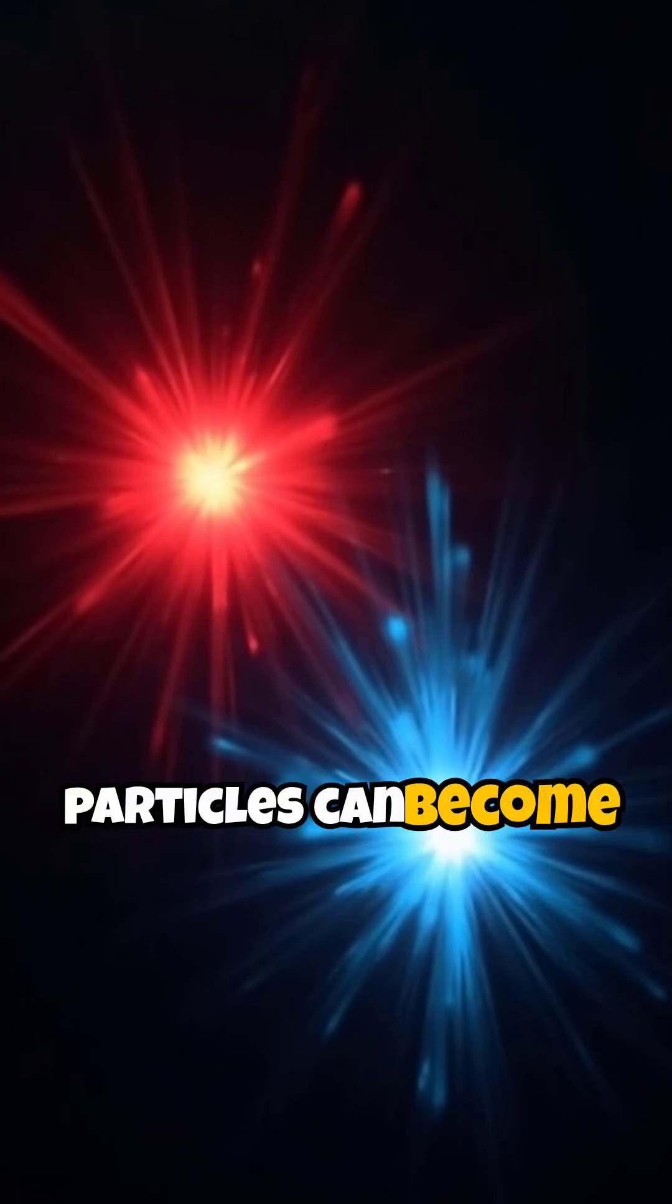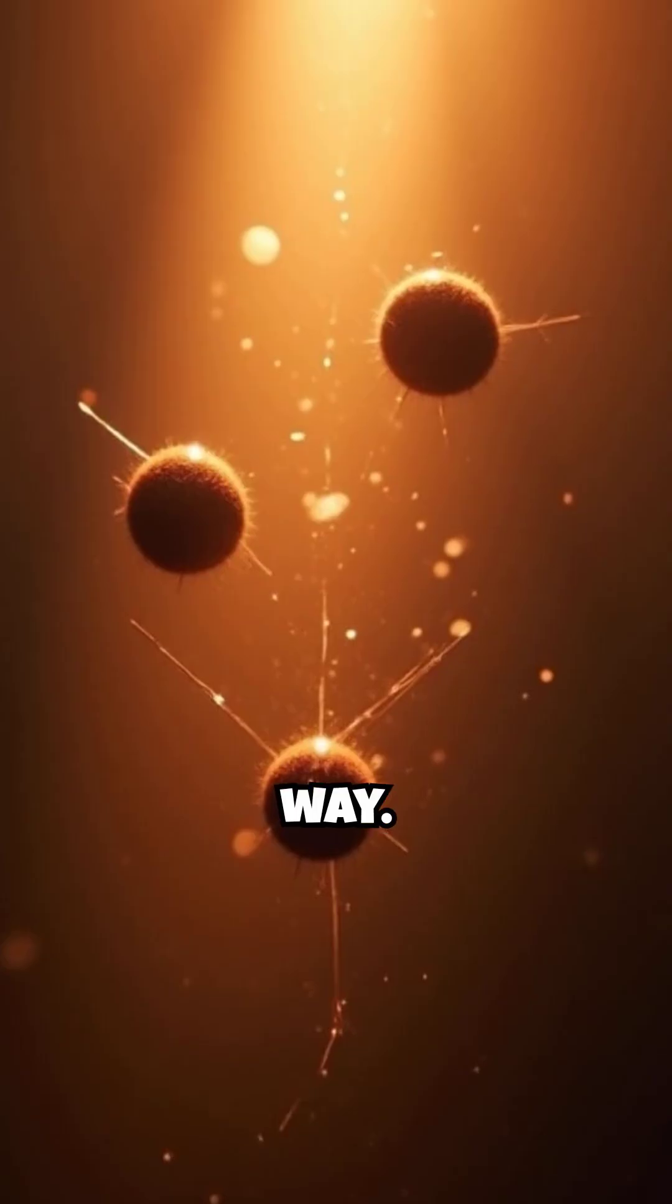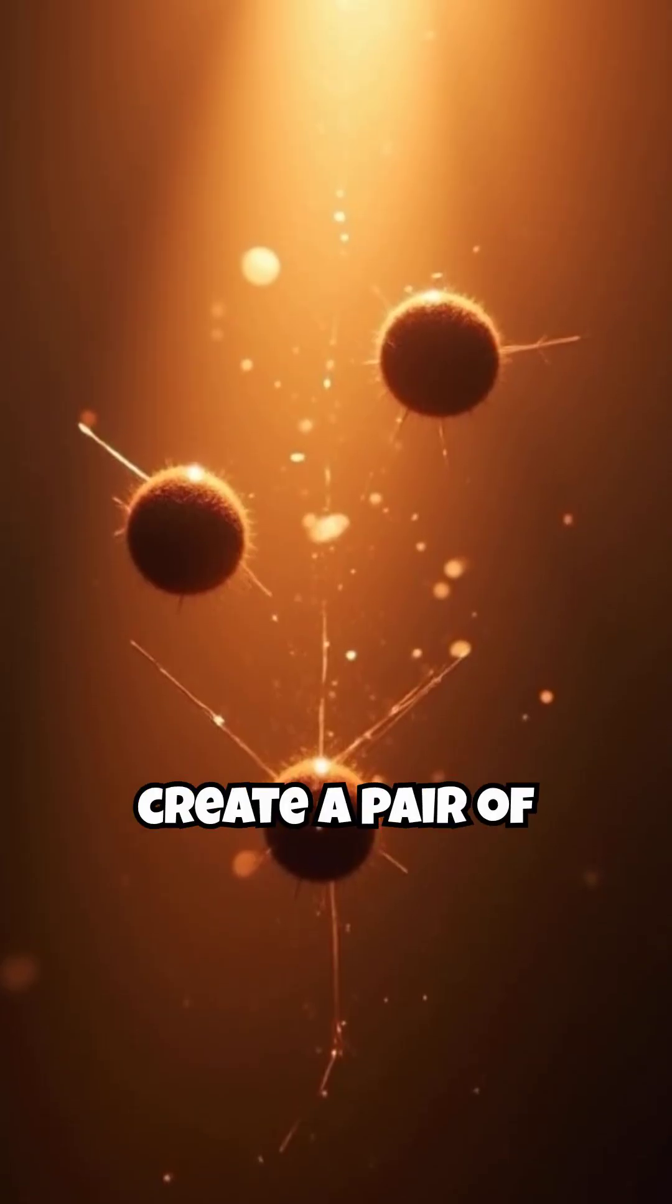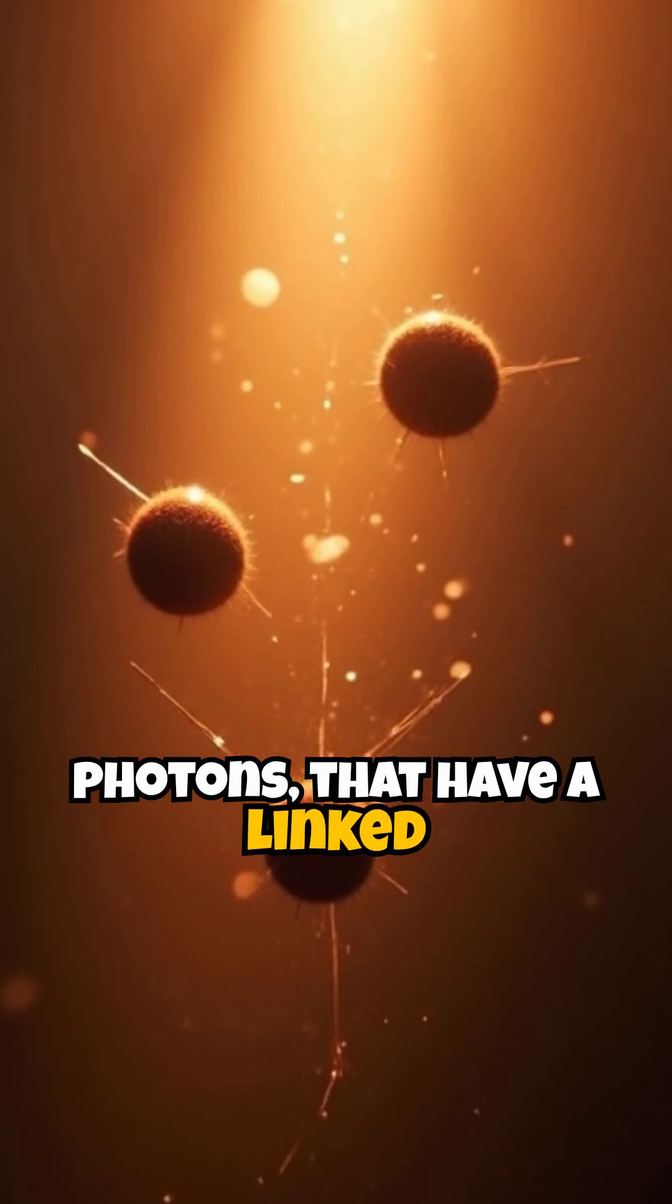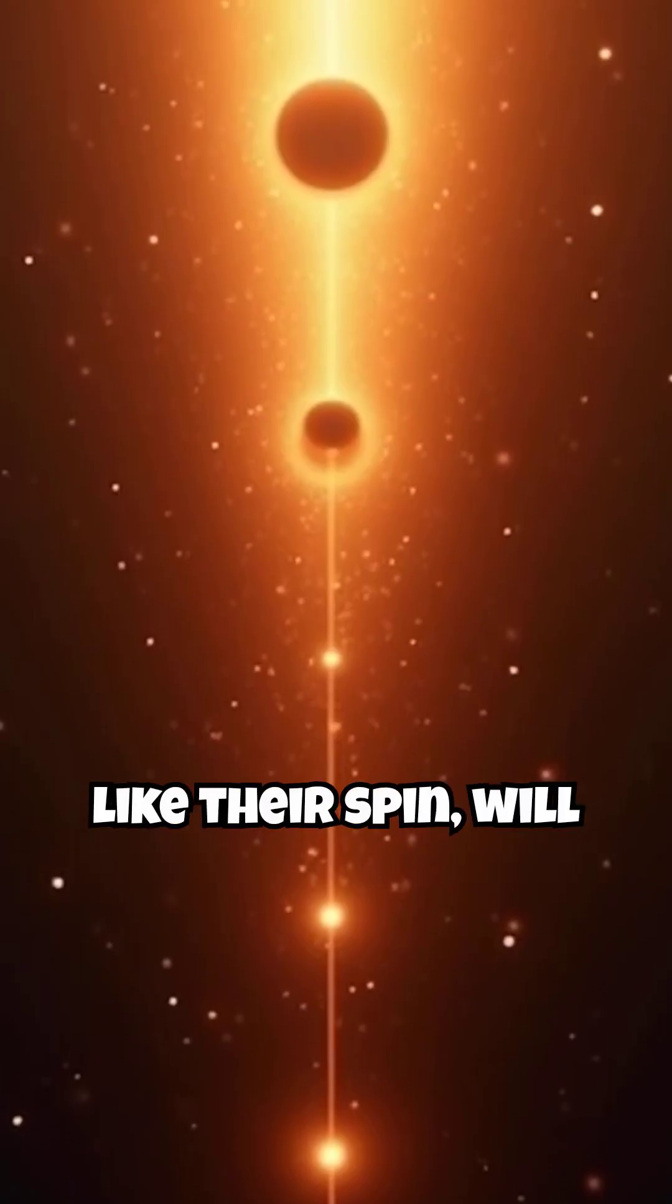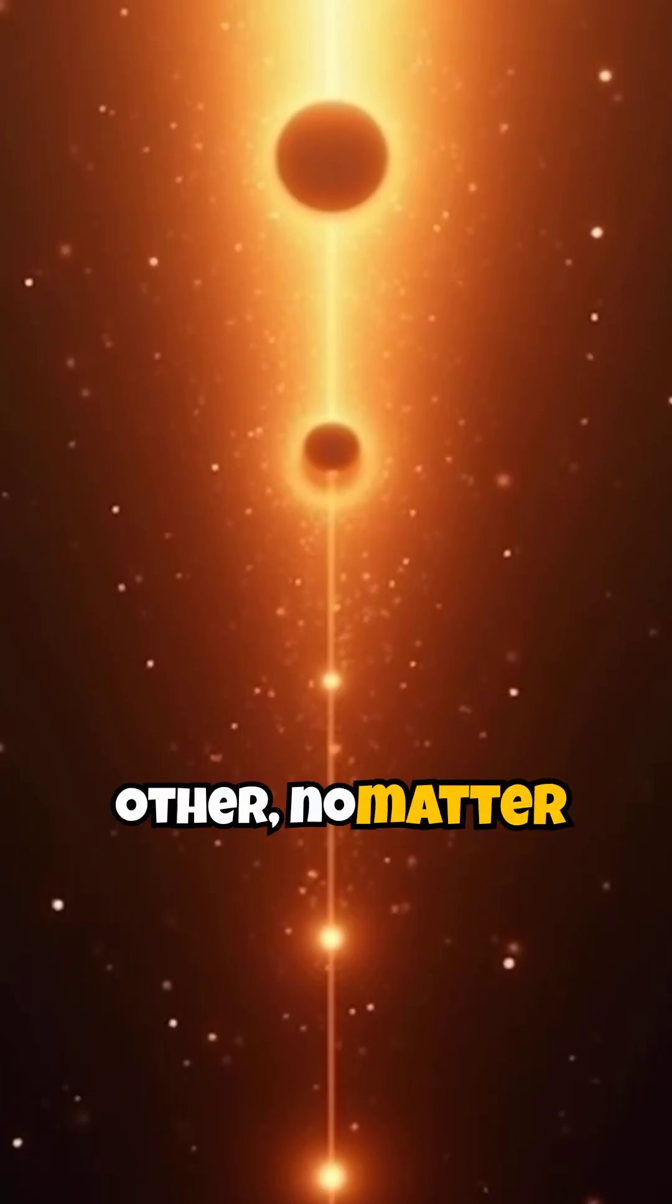First, two particles can become linked in a fundamental way. It is possible to create a pair of particles, like photons, that have a linked fate. Their properties, like their spin, will be opposite to each other, no matter what.